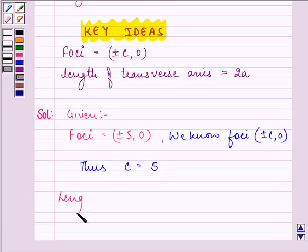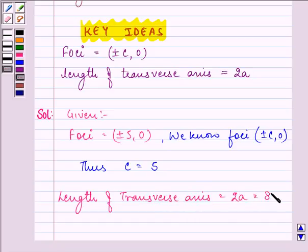Also, the length of transverse axis is known to us as 2a, but it is given to us as 8. Thus we have the value of a as 4.